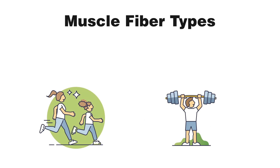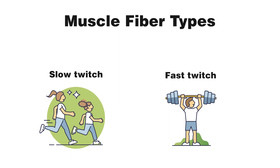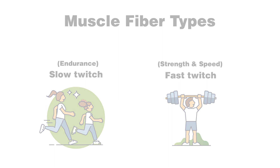Hi everyone, welcome to Body Works Prime. Today we're going to be going over the different muscle fiber types. From a very basic level we have slow twitch fibers and fast twitch fibers, and fundamentally the slow twitch fibers are going to be more of an endurance type work, and the fast twitch fibers are going to be used in more strength type work.